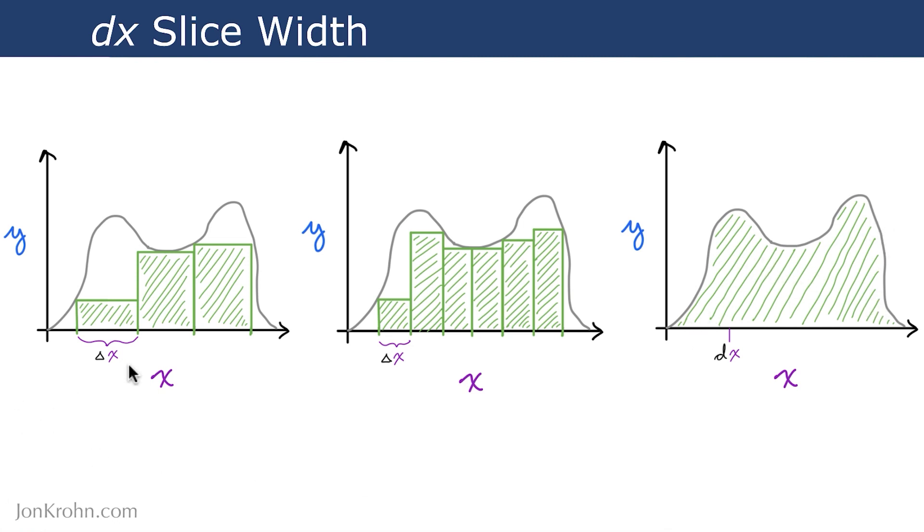For example, if we have a slice width of delta x, this difference on the x-axis, and we use that same delta, that same difference on the x-axis to mark off, in this case, three rectangles under this particular curve.